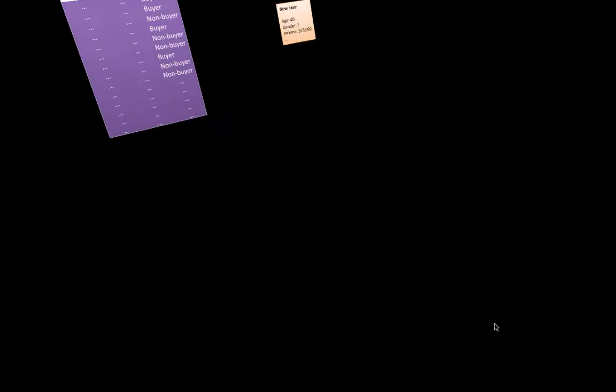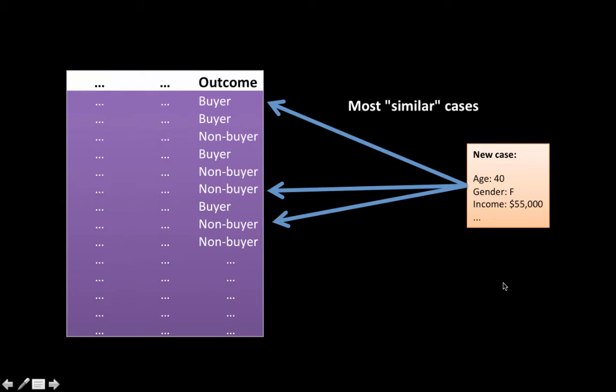Translating that to our earlier example, we have our historical data on the left. We have a new case that we need to classify on the right. So we're going to do the classification based on the most similar cases, K most similar cases to this case in this historical data. And again, for now, we will not worry about what this similar means. And let's assume for now that we are considering K is 3. Why 3? Talk about it later. So we want, let's say by some means, we find that the most similar cases are this, this, and this. Notice that the first is a buyer, second is a non-buyer, third is a non-buyer. So we have a majority of non-buyers. And therefore, we'll classify this new case as a non-buyer. As simple as that.